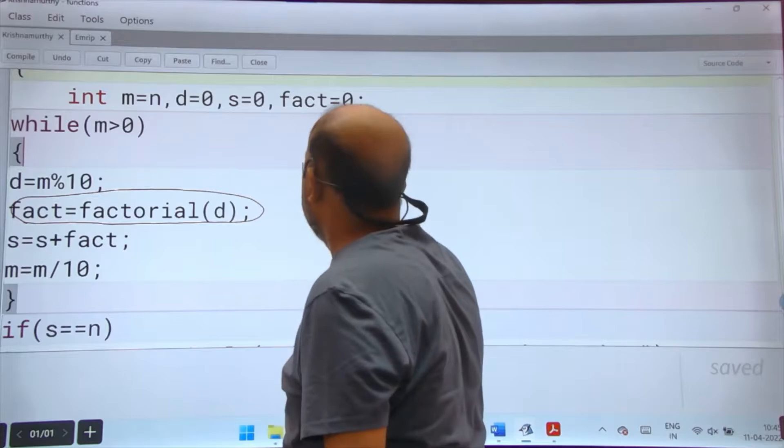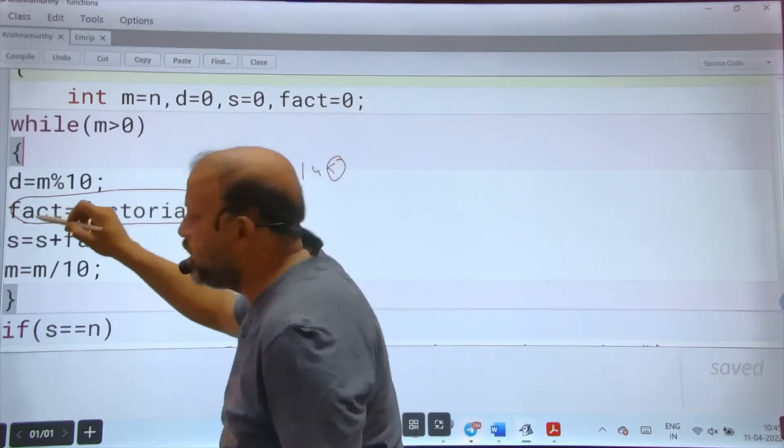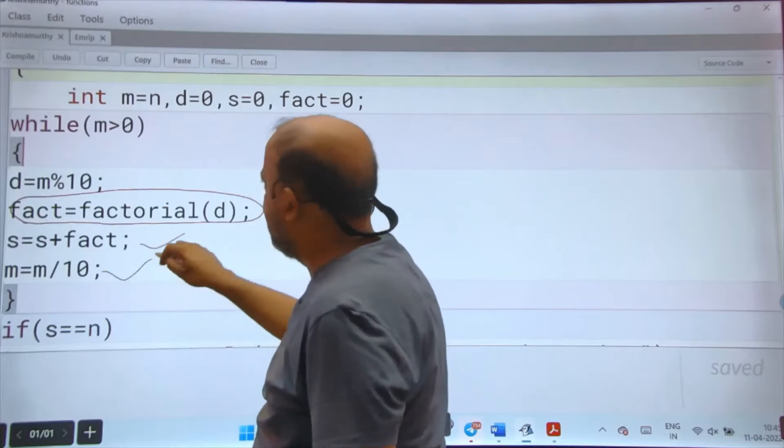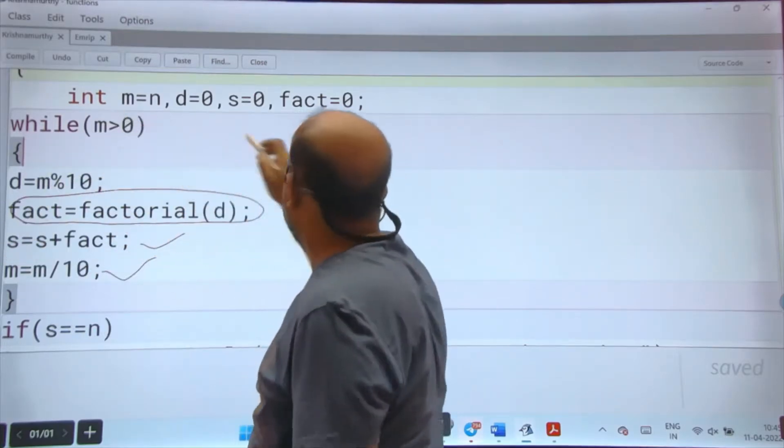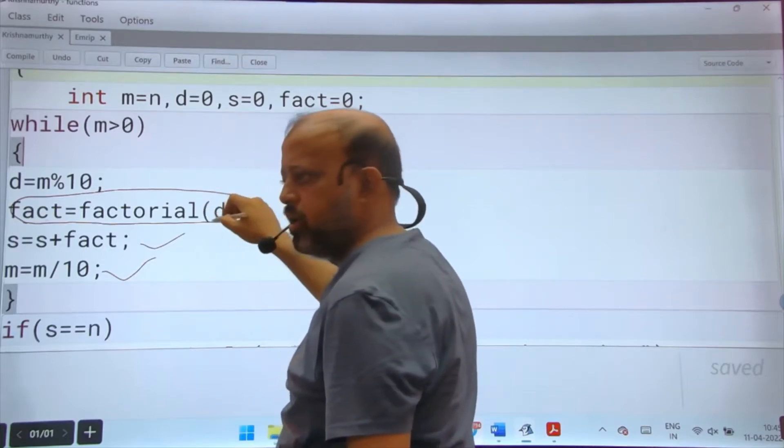If your number is 145, you will get 5, you will get factorial of 5, that is added. Then m by 10, you will get 4 in d, 4 factorial. I have not told you about previous things like taking duplicate and all those things, assume that you know that.